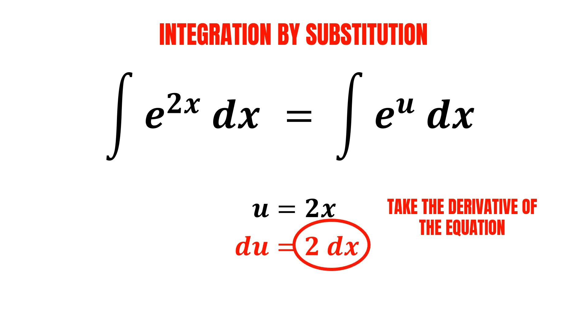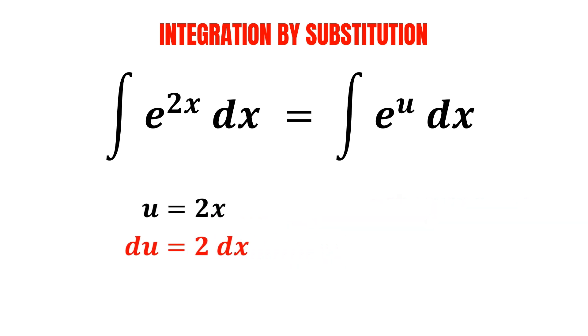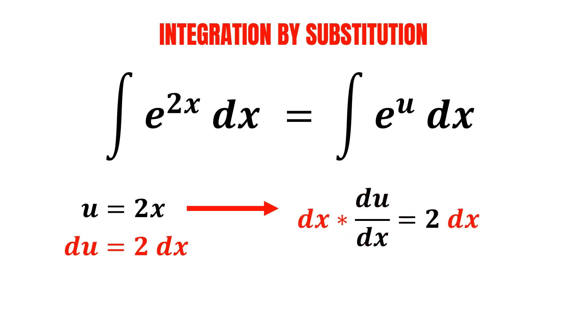In case you're wondering why we end up with 2dx, you can think of it as taking the derivative of u with respect to x, which is 2. Then multiply both sides by dx, and we can cancel out dx on the left-hand side, giving us du equals 2dx, which is the same as what we found earlier.